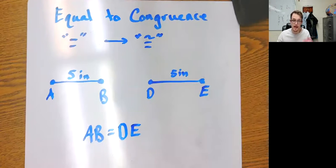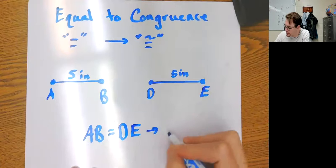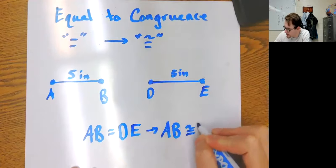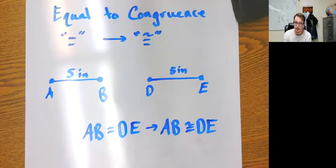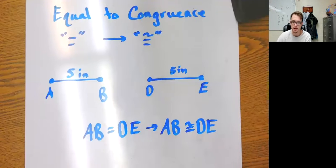Well, I know that line segment AB is equal to line segment DE. And if I know they're equal, if I know they're the same length, if I know they're the same value, I also know that they're congruent. So I can change this to AB is congruent to DE. If things are equal, then they're congruent.